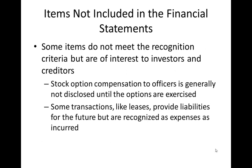The third category covers items not included in the financial statements. Some items do not meet the recognition criteria but are of interest to investors and creditors. For example, stock option compensation to officers is generally not disclosed until the options are exercised. Some transactions, like operating leases, do actually create liabilities for the future but are generally recognized as expenses as incurred or paid.